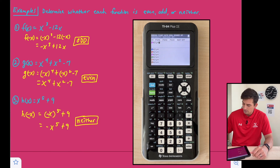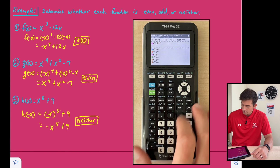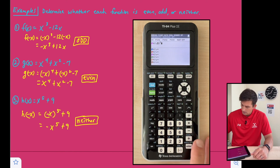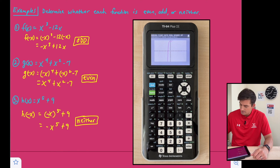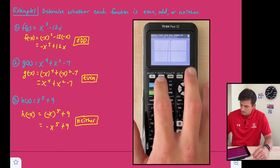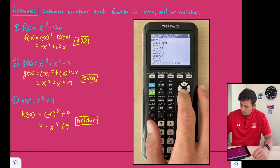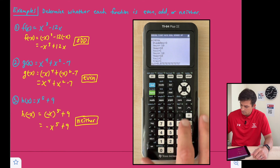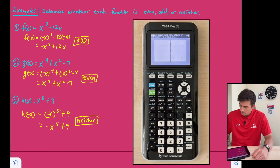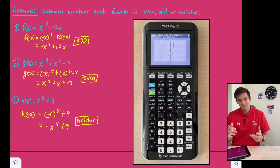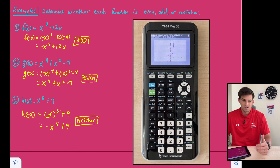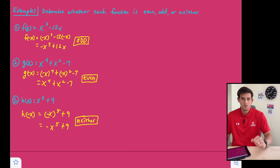Let's see what this graph would look like. We graph x to the fifth plus nine, adjust our window by changing y max to maybe 50, and we see our graph. If we folded over the y-axis, it's not symmetrical. And if we folded over the origin, it's also not symmetrical. So that's how we can identify even and odd polynomial functions.